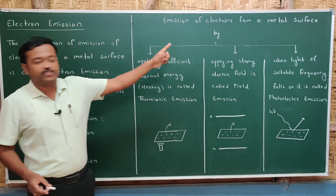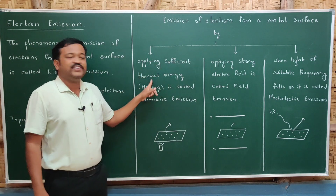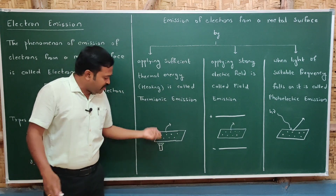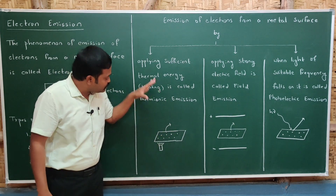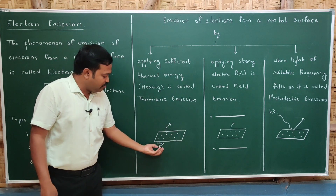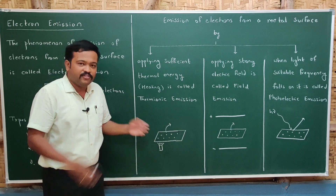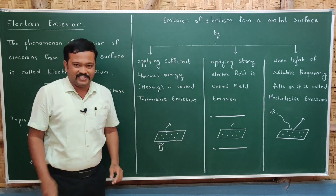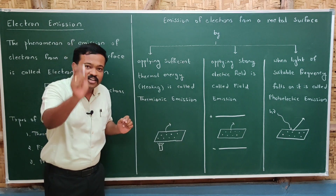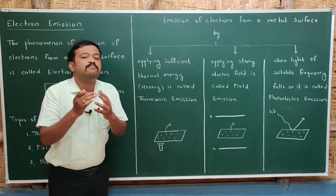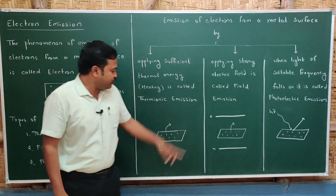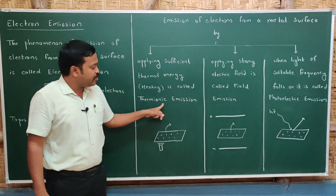Emission of electrons from a metal surface by applying sufficient thermal energy — meaning by heating the metal — is called thermionic emission. When you take a metal and heat it, the electrons will come outside. If you increase the amount of heat given, the number of electrons emitted also increases. The electrons which come out of these metals are called thermal electrons, and the number of thermal electrons is directly proportional to the amount of heat given.